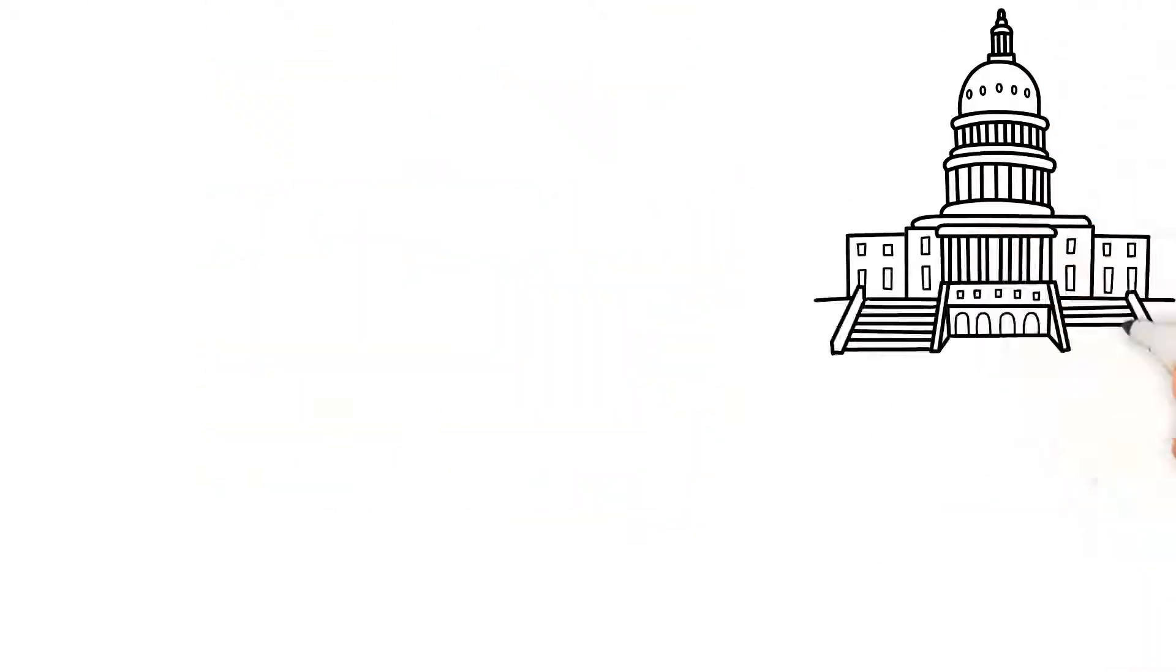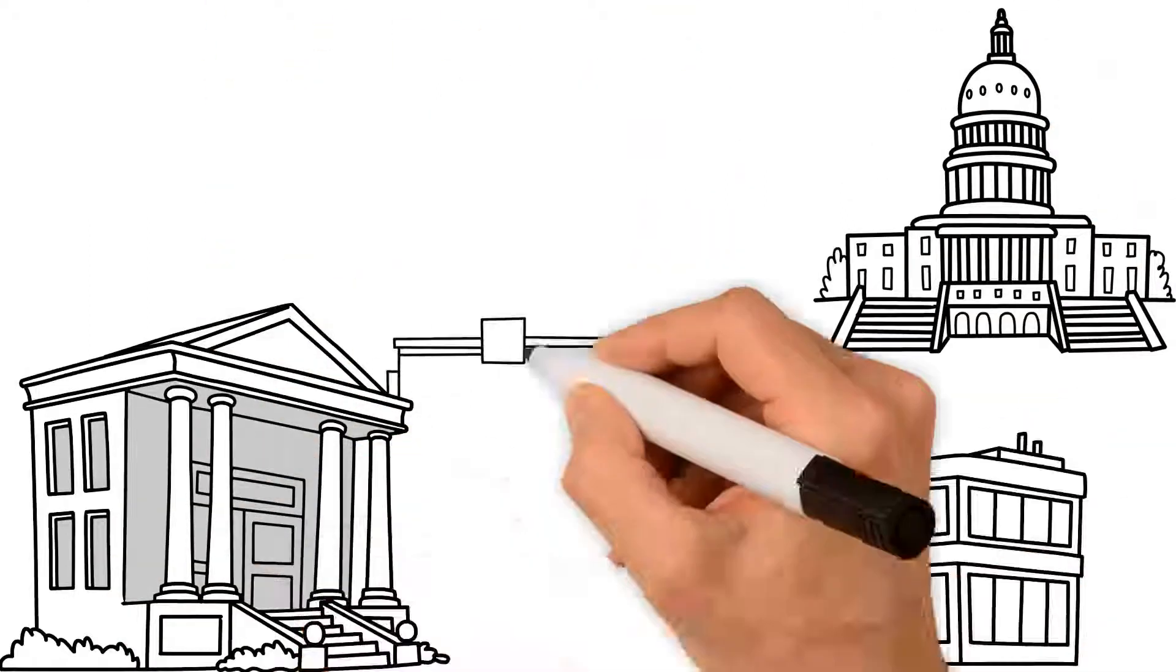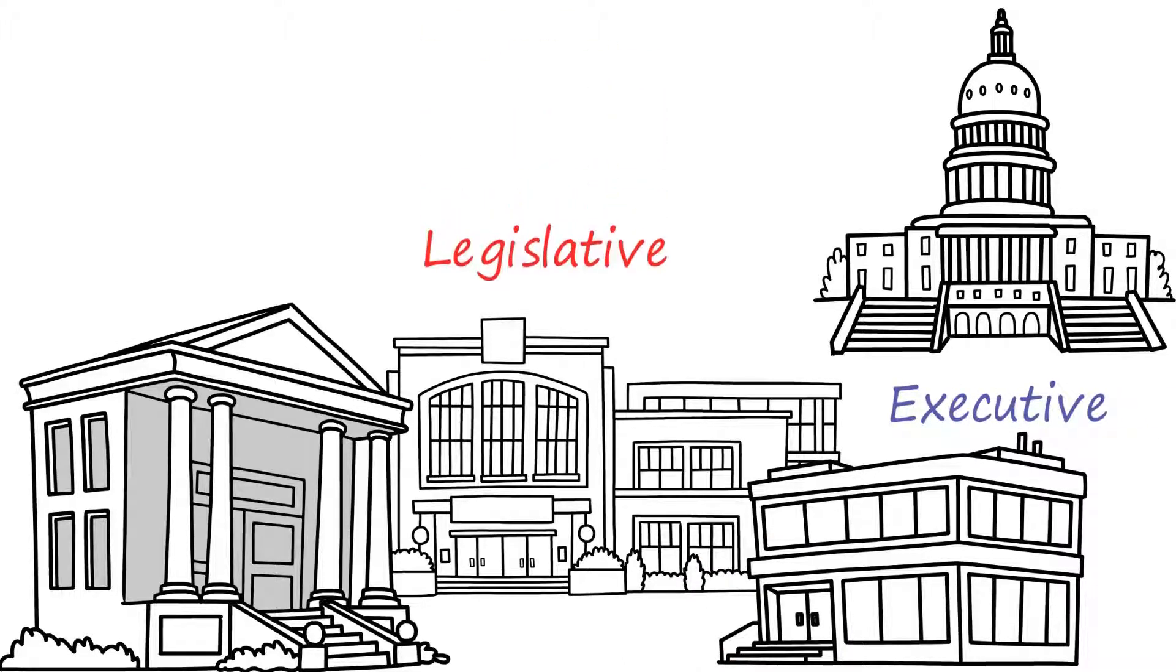Similar to the federal government, most states have three branches of government. The branches are executive, legislative, and judicial.